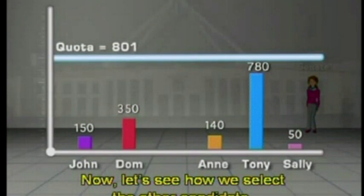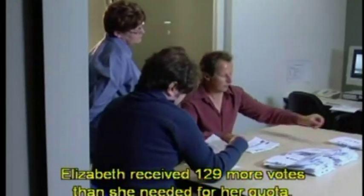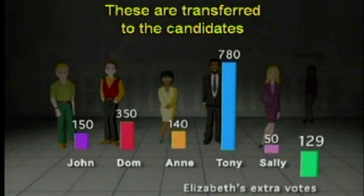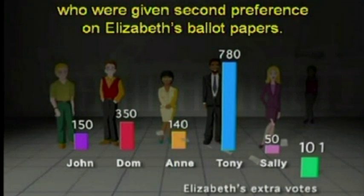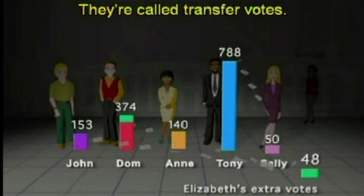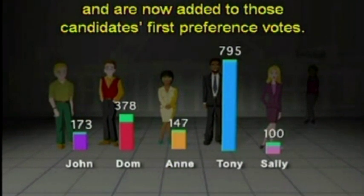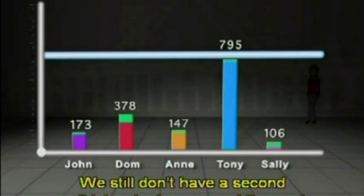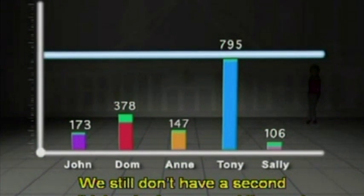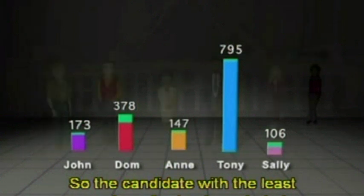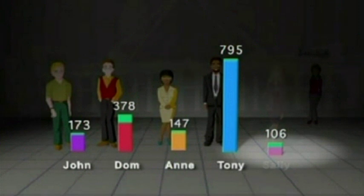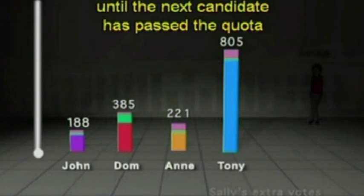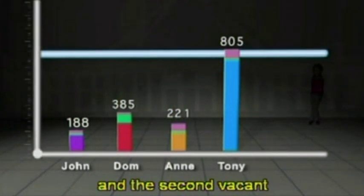Now, let's see how we select the other candidate. Elizabeth received 129 more votes than she needed for a quota. These are transferred to the candidates who were given second preference on Elizabeth's ballot papers. They're called transfer votes and are now added to those candidates' first preference votes. We still don't have a second candidate who has passed the quota, so the candidate with the least number of votes is excluded and these votes are distributed. This process of exclusion and distribution continues until the next candidate has passed the quota and the second vacant Senate position is filled.